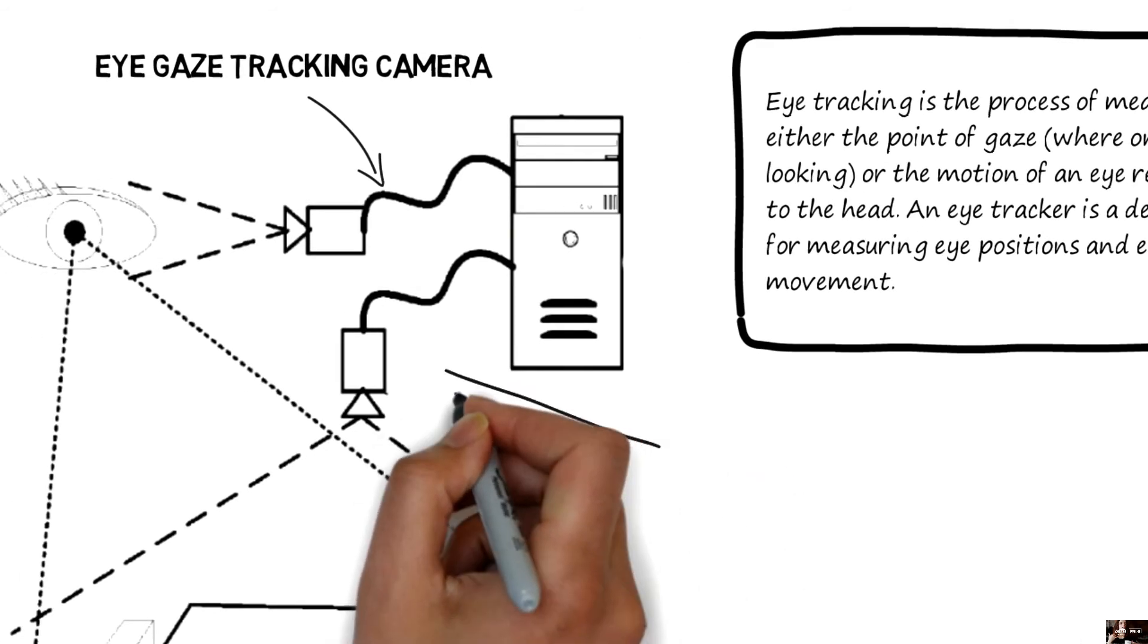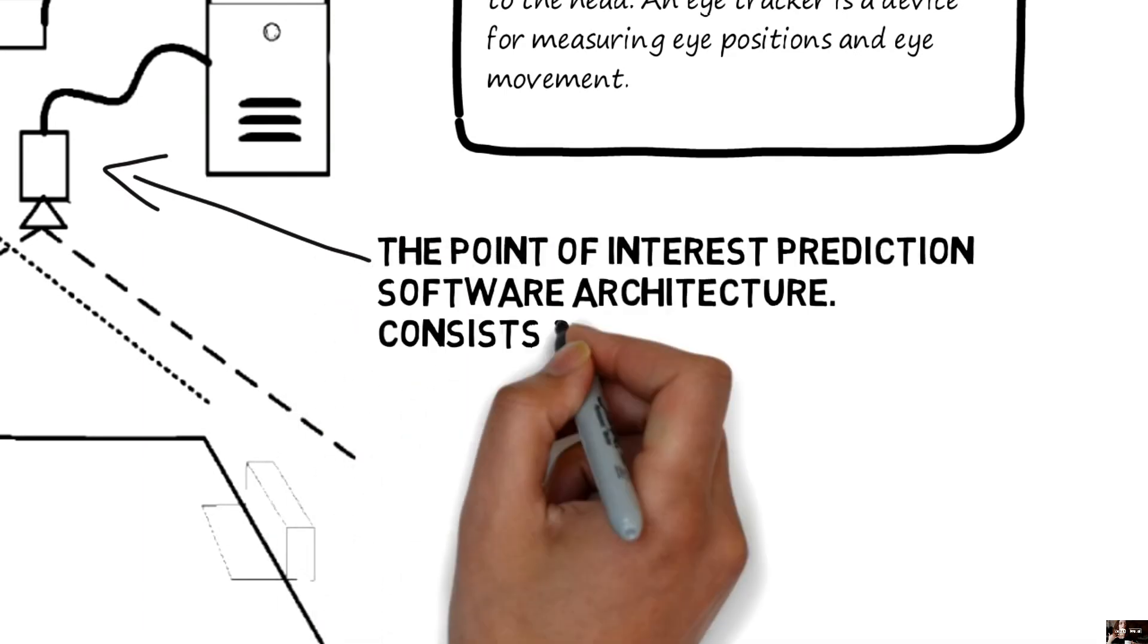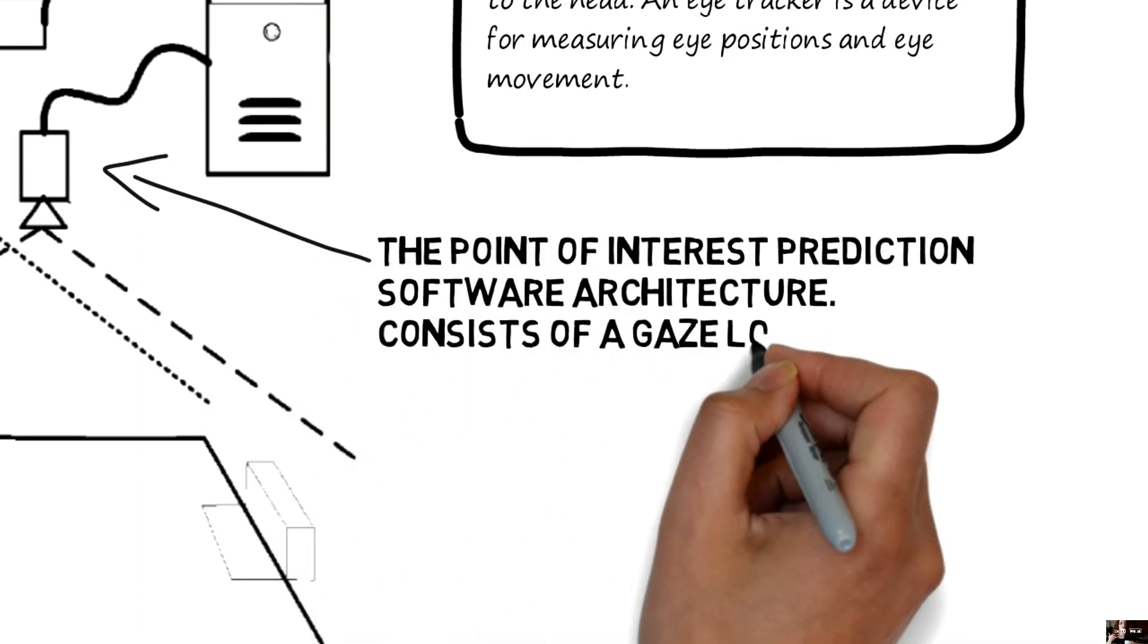Let's talk about the secondary camera you are looking at in the patent document. The secondary camera is actually loaded with the point of interest prediction software architecture.